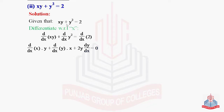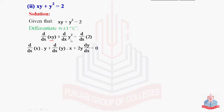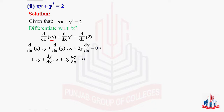For d/dx(xy), we apply the product rule: derivative applies to x first, keeping y as is, plus derivative applies to y keeping x as is. So that gives 1·y + x·(dy/dx). For d/dx(y²), using the power rule, we get 2y·(dy/dx) by the chain rule. The right-hand side, derivative of constant 2, equals 0. So: y + x(dy/dx) + 2y(dy/dx) = 0.